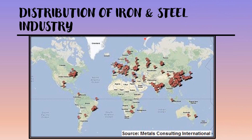As far as the distribution of the iron and steel industry is concerned, the USA has a large number of iron and steel producing centers. We can see clusters of iron and steel industries in the northeastern part of the USA, and the producing centers include Alabama, Pittsburgh, Youngstown, Chicago and Gary. All these industries are clustered here because of the availability of raw materials found in the vicinity.